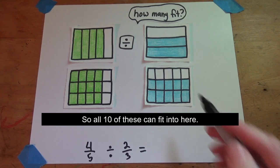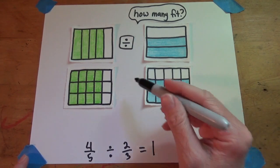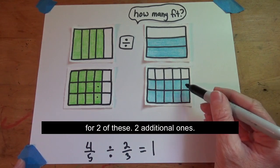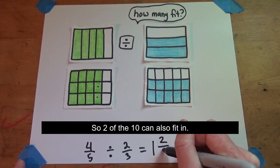So all 10 of these can fit into here, which equals 1. And then we'll still have 2 spaces left over, so 2 of the 10 can also fit in.